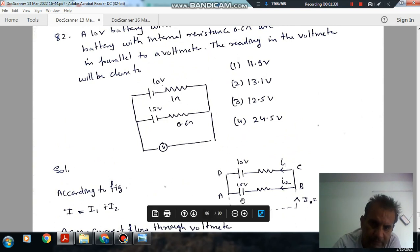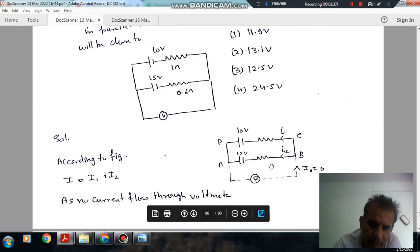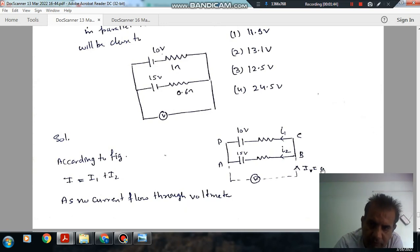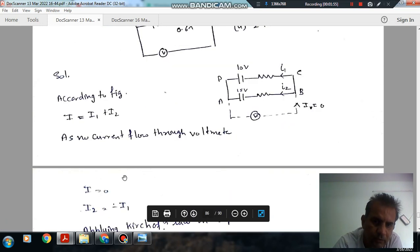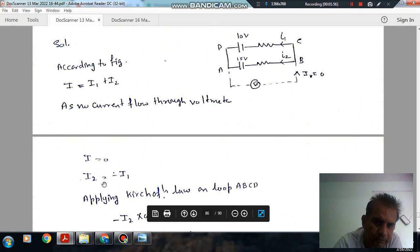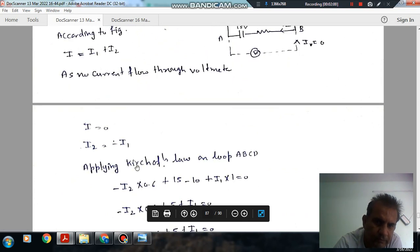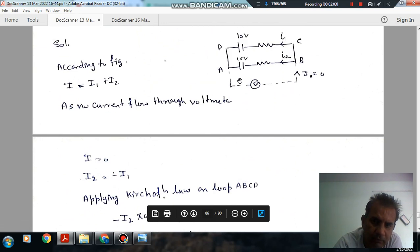As they are connected in parallel, the voltmeter reading will be same for both. So, I1 is the current flow through this and I2 is the current flow through this. But net current flow is 0 because the voltmeter will not have any current. So, I is equal to I1 plus I2. So, I is 0. So, I2 will be equal to minus I1.